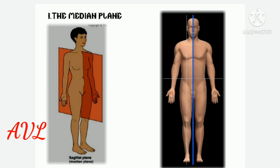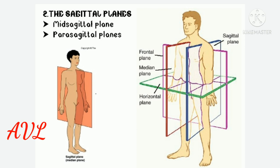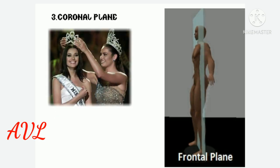The median or midsagittal plane is an imaginary vertical plane that passes through the exact center of the body, dividing it into equal right and left halves. The parasagittal plane is a vertical cut that is off-center, giving unequal right and left halves. The coronal plane is an imaginary vertical plane passing at a right angle to the sagittal plane, dividing the body into anterior (ventral) and posterior (dorsal) parts.